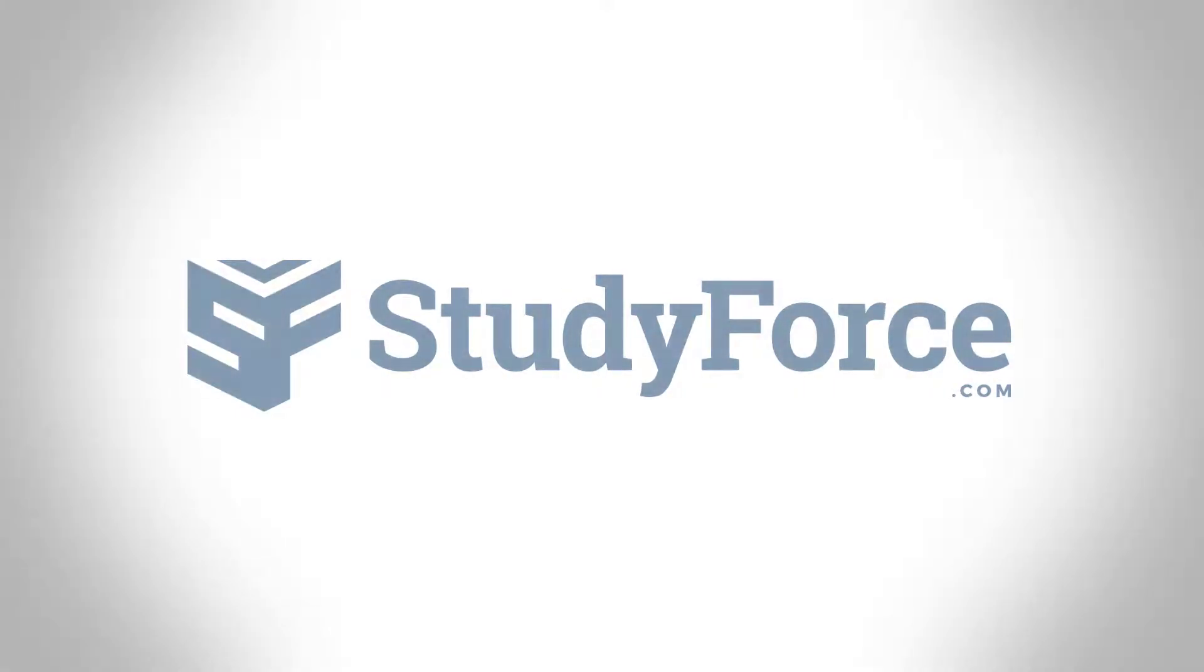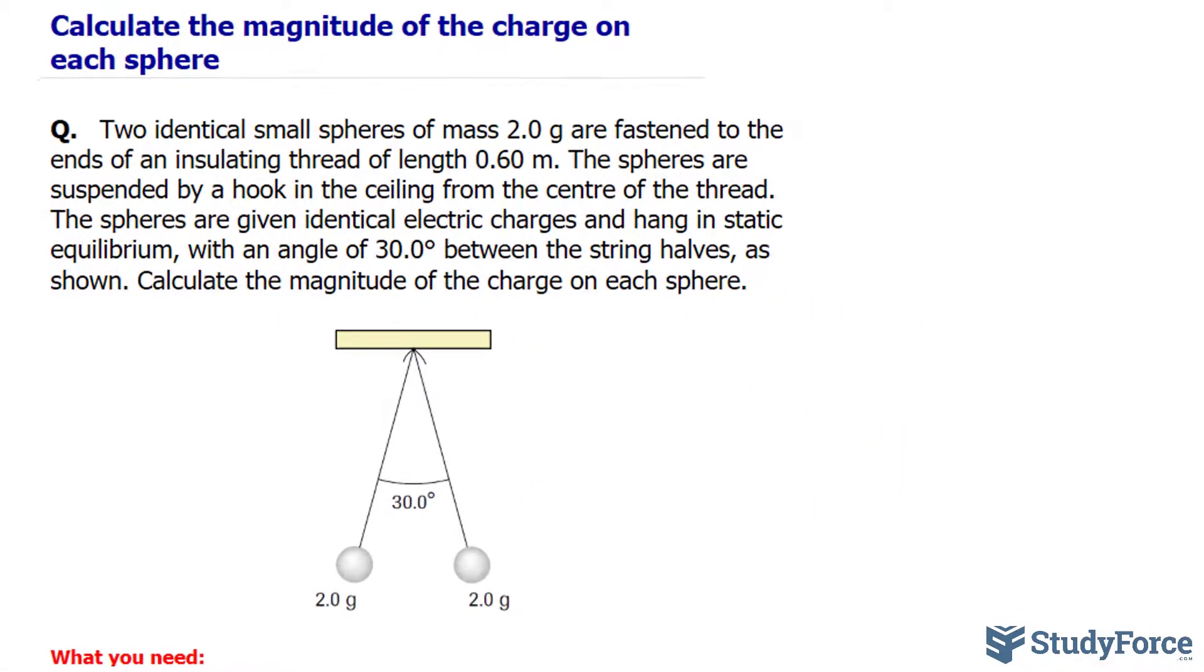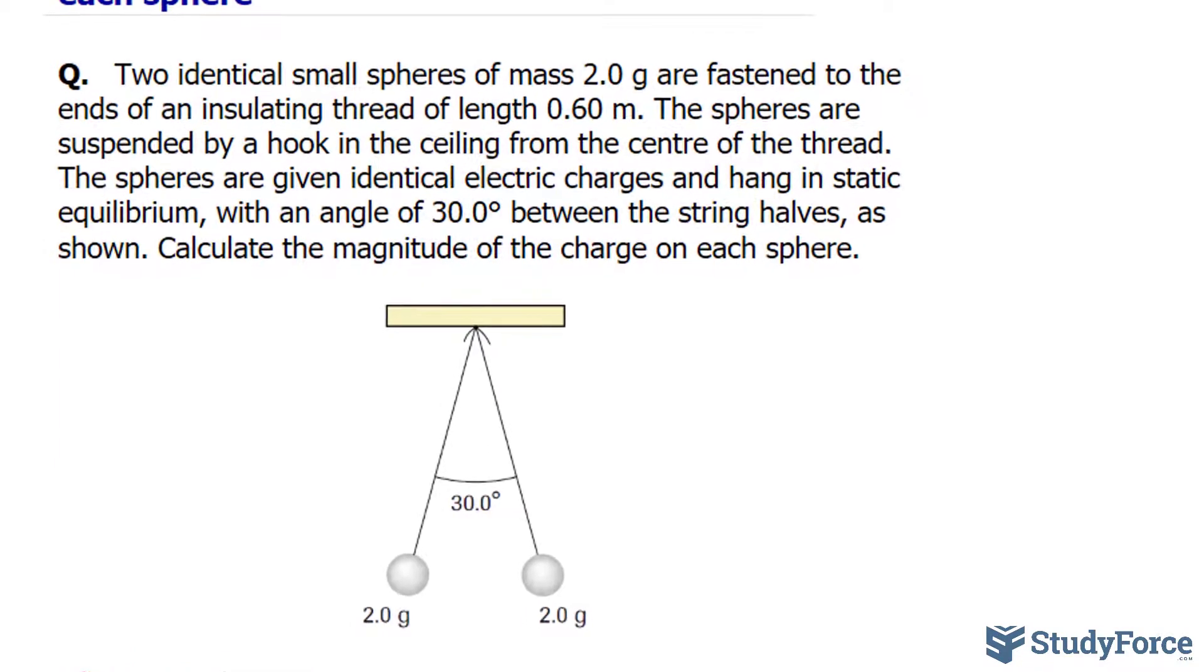Two identical small spheres of mass 2 grams are fastened to the ends of an insulating thread of length 0.60 meters. The spheres are suspended by a hook in the ceiling from the center of the thread.